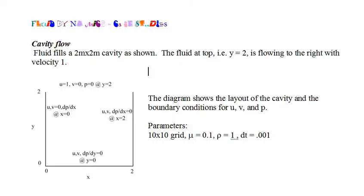The first is cavity flow. Our cavity is, of course, a 2 by 2 square, but it could have been any size rectangle. It's filled with fluid, and the fluid at the top boundary is moving to the right with a velocity of 1 meter per second. We want to see what flow it induces in the cavity.